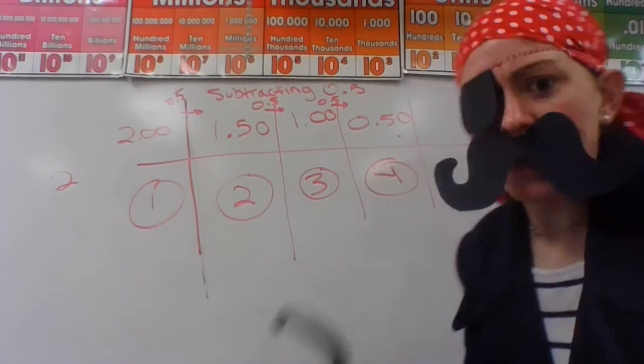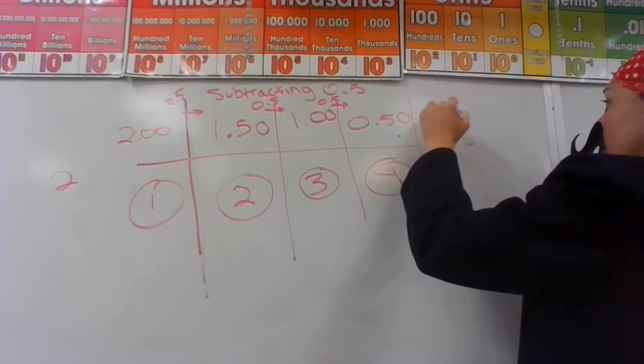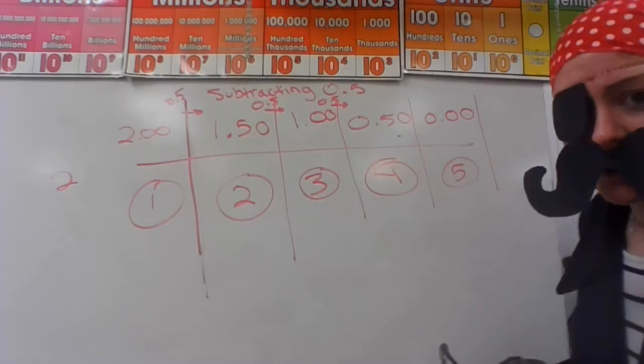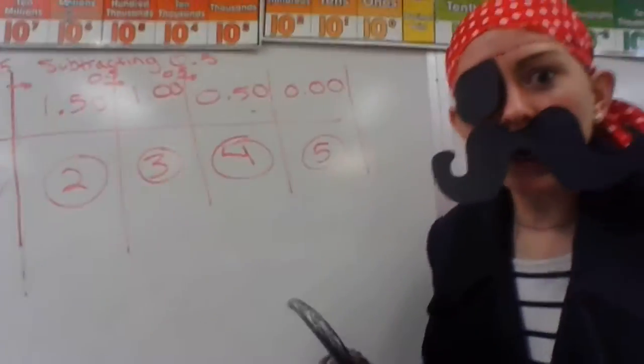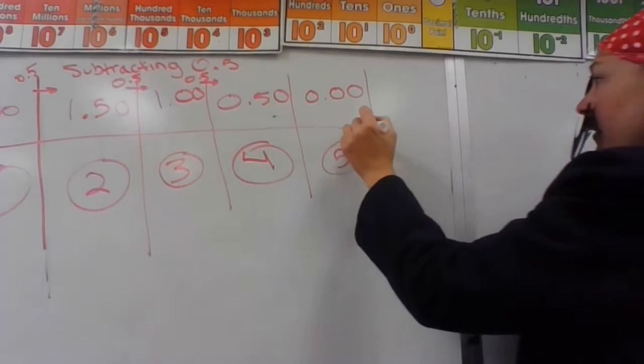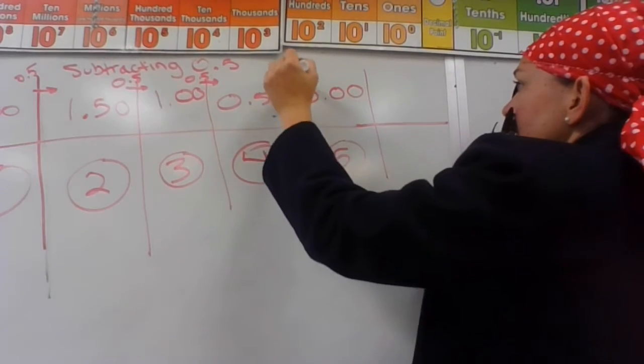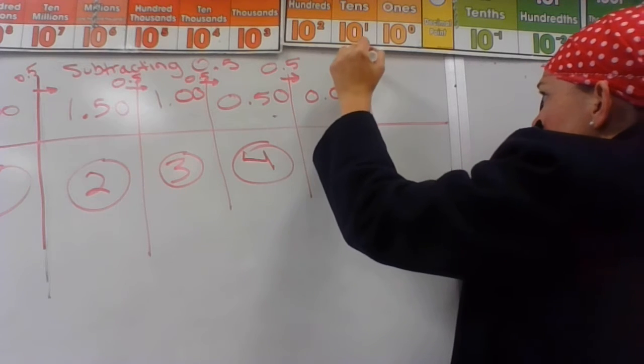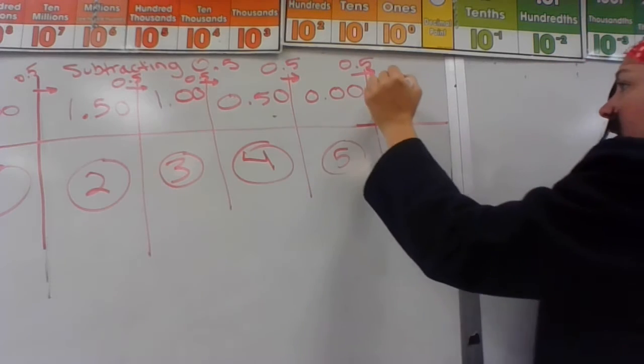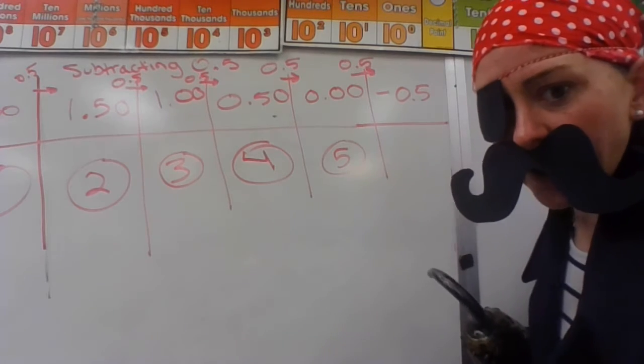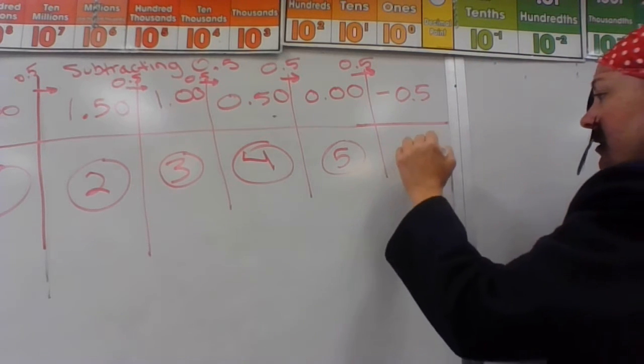That would be number five. And then we can keep going, because maybe I owe a bloke some money. Now if I take away five tenths of a dollar again, I'm left with negative zero decimal five, or negative five tenths. That would be number six.